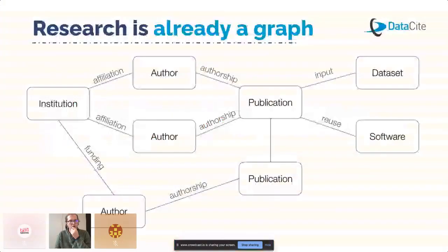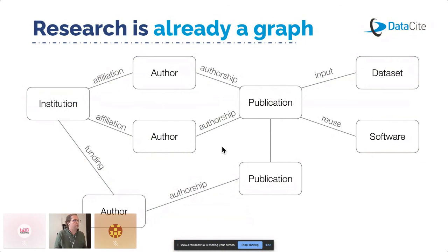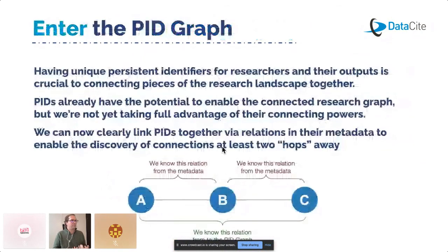Research is a graph. We have an institution, we have an author who may have an affiliation, they may author a publication, they may have used a dataset, they may have reused software. We know that this graph exists out there and this is how research is produced.